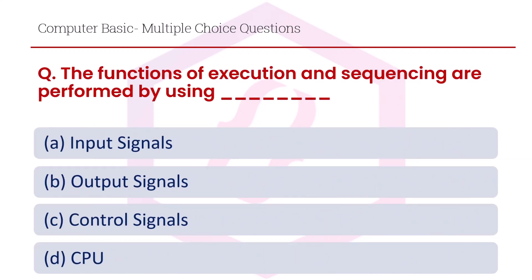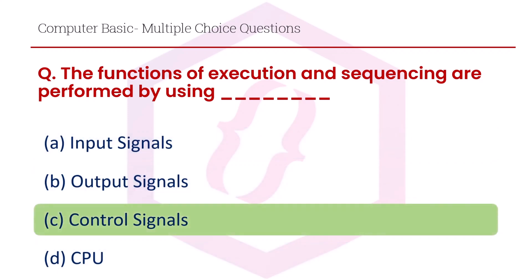The functions of execution and sequencing are performed by using: option A input signals, option B output signals, option C control signals, option D CPU. The right answer is option C, control signals.